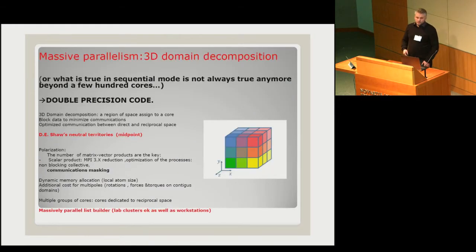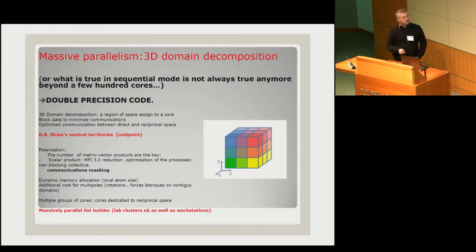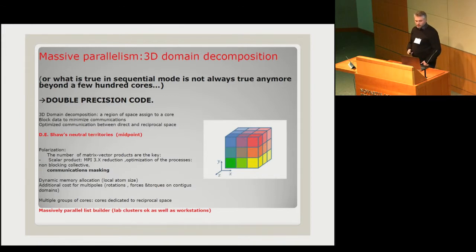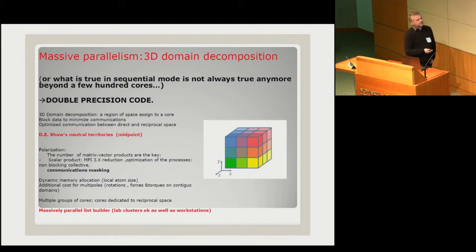We then plugged this into a 3D domain decomposition using neutral territories, which helps localize data onto a machine — handling all communication and dynamic memory allocation. Coupled with a massively parallel neighbor-list builder, you can have polarizable MD scaling like GROMACS. The amount of work in 3D domain decomposition due to polarization is larger: you have many more FFTs. The cost of using polarization versus a classical force field in our framework is approximately a factor of five.